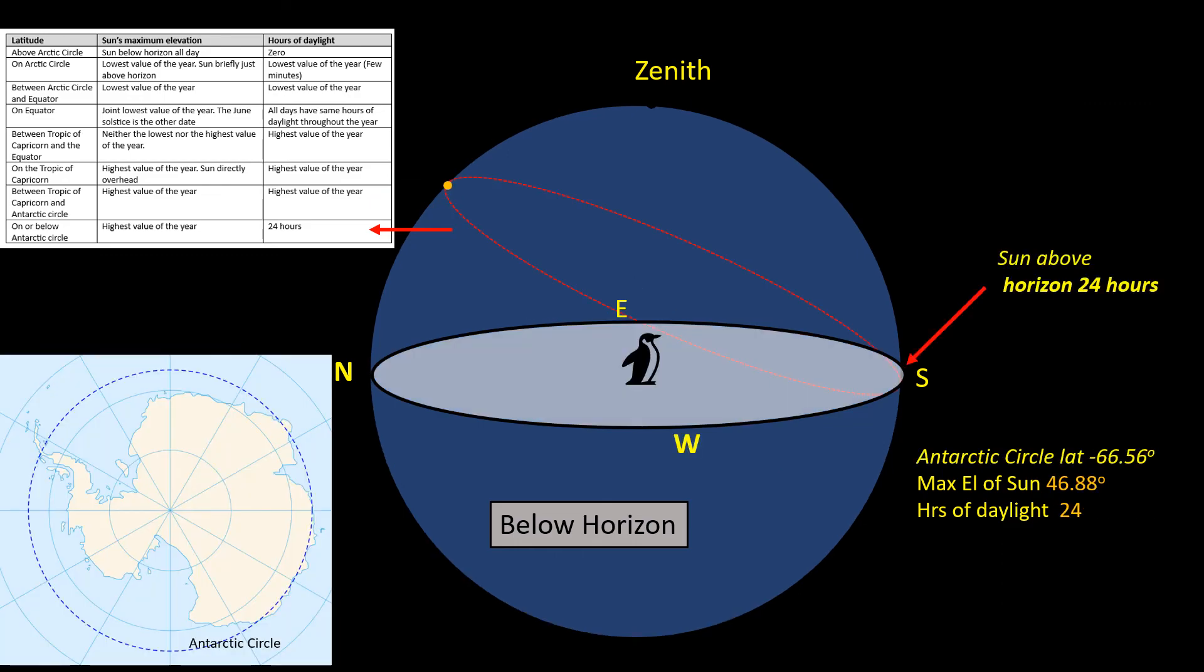If we go to locations with latitudes on the Antarctic Circle, the sun doesn't set at all on the day of the solstice. It just touches the horizon at its lowest elevation of the day, so there are 24 hours of daylight. On the days either side of the solstice though, the sun does set.